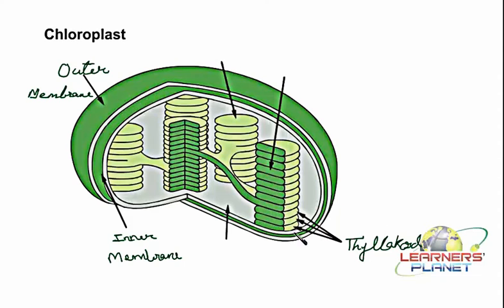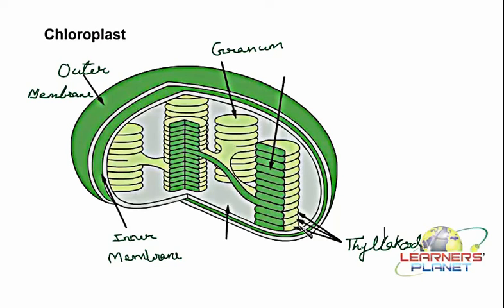These thylakoids are arranged in stacks, placed one above the other. The entire bundle inside the inner cavity of the chloroplast is together known as the granum. Further, inside the thylakoids there is an inner space — these layers are not stuck to each other. There is an inner cavity present, and this inner cavity is known as the lumen.